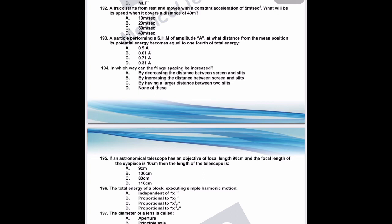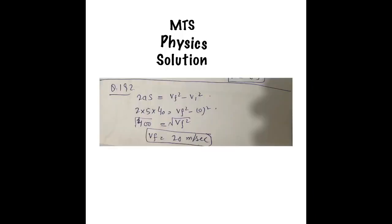Question 192: a truck starts from rest with constant acceleration of 5 m/s². What is its speed after covering 40 m? Using the third equation of motion: 2as = v² - u², so 2×5×40 = v² - 0, giving v² = 400, v = 20 m/s.